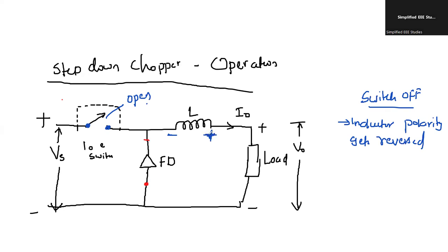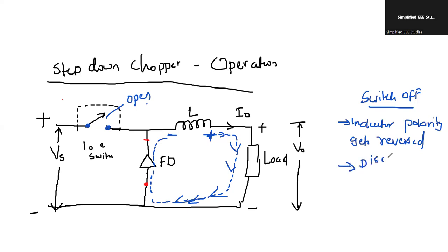Whenever the inductor polarity gets reversed, the discharging action will take place. The current flow will be in the reverse fashion — discharging action takes place. Inductor discharges. Similarly, the freewheeling diode FD becomes forward biased.